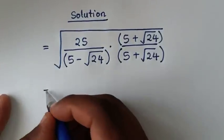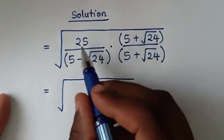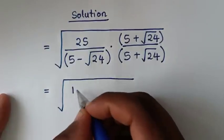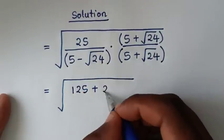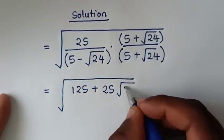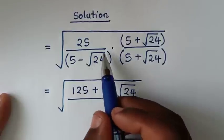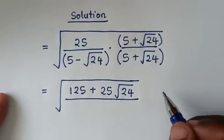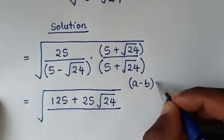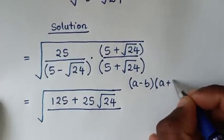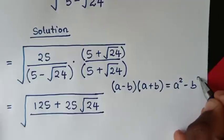Then, in the next step, it will be equal to square root of 5 times — 25 times 5 is 125, plus 25 times square root of 24, which is 25 square root of 24. Then, over from here the denominator, this times this is in the form of a perfect square — it is in the form of (a minus b)(a plus b).